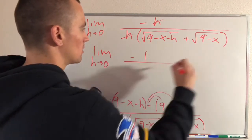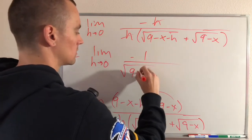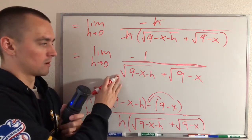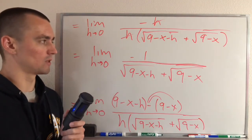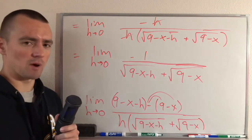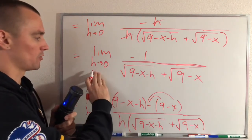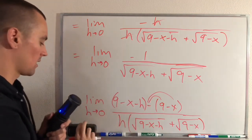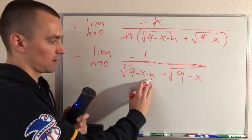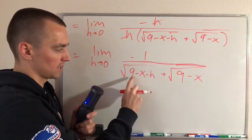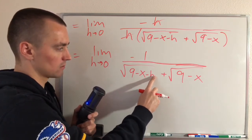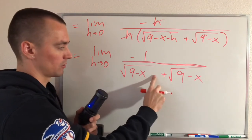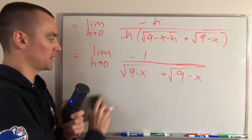So now that we've canceled out that h on the bottom that was our original goal, remember was to do that. Now that we've done that, let's think about what would happen if we just at looking at this limit, if we just evaluated it by simply plugging in 0 for h. If we were to do that there's really only one place where we have an h right here. So if we plug in 0 for h we're just gonna get 9 minus x minus 0 which is just gonna be the same as 9 minus x.